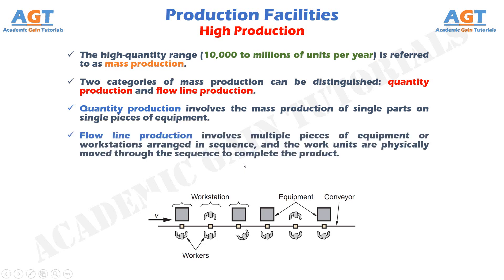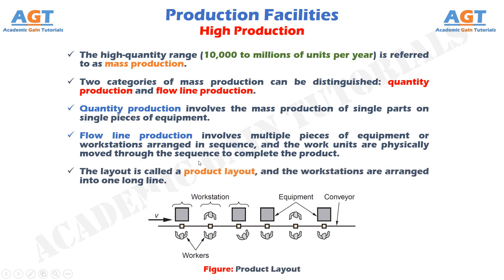Flow line production involves multiple pieces of equipment or work stations arranged in sequence, and the work units are physically moved through the sequence to complete the product. The work stations and equipment are designed specifically for the product to maximize efficiency. The layout is called a product layout, and the work stations are arranged into one long line, as shown in this figure, or into a series of connected line segments. Work is usually moved between stations by mechanized conveyor. At each station, a small amount of the total work is completed on each unit of product. The most familiar example is the assembly line, associated with products such as cars and household appliances.